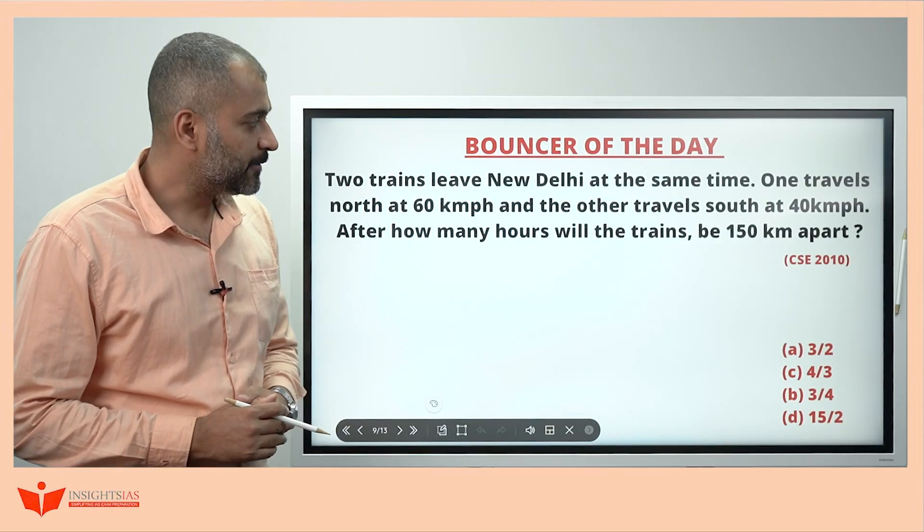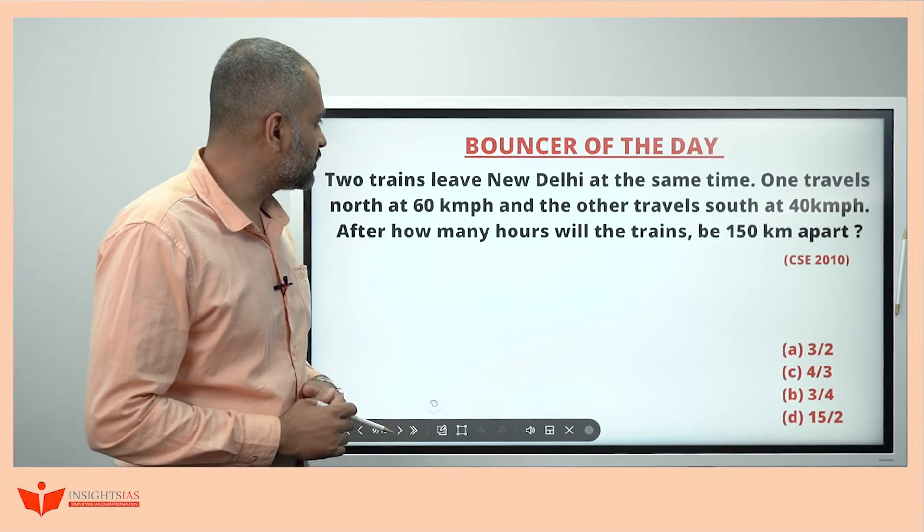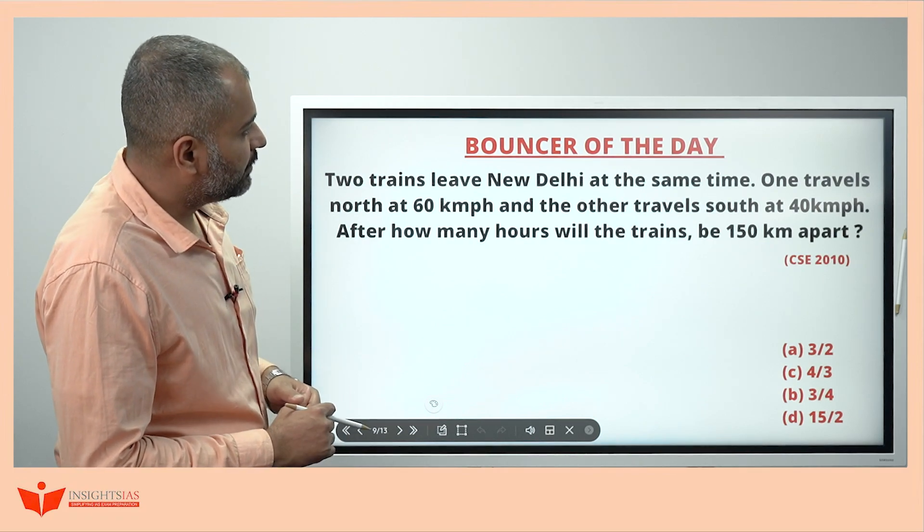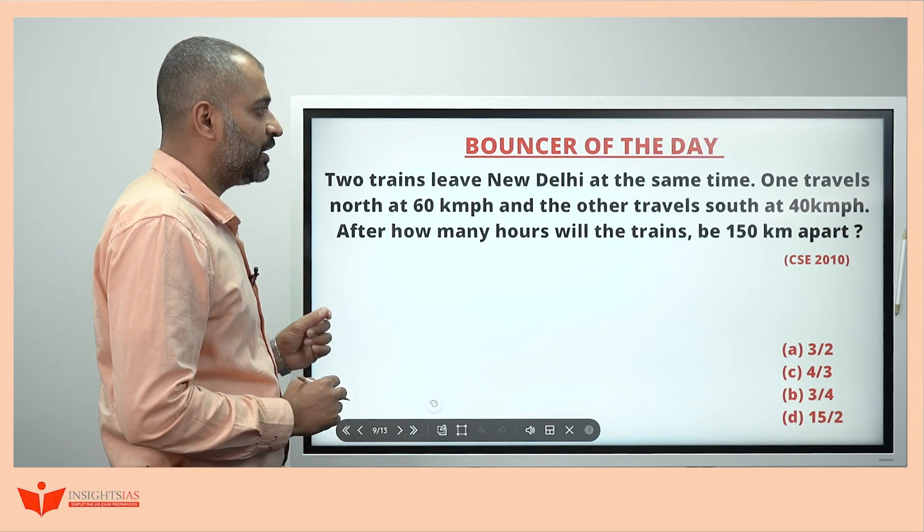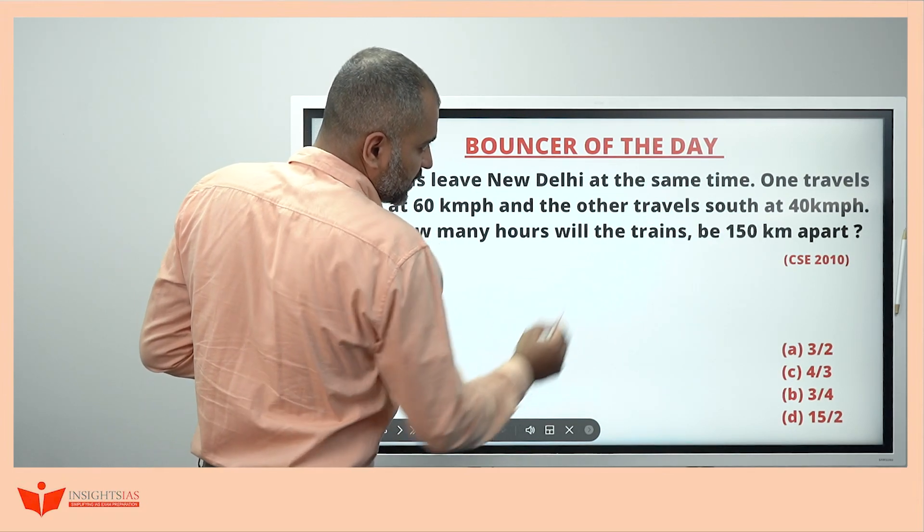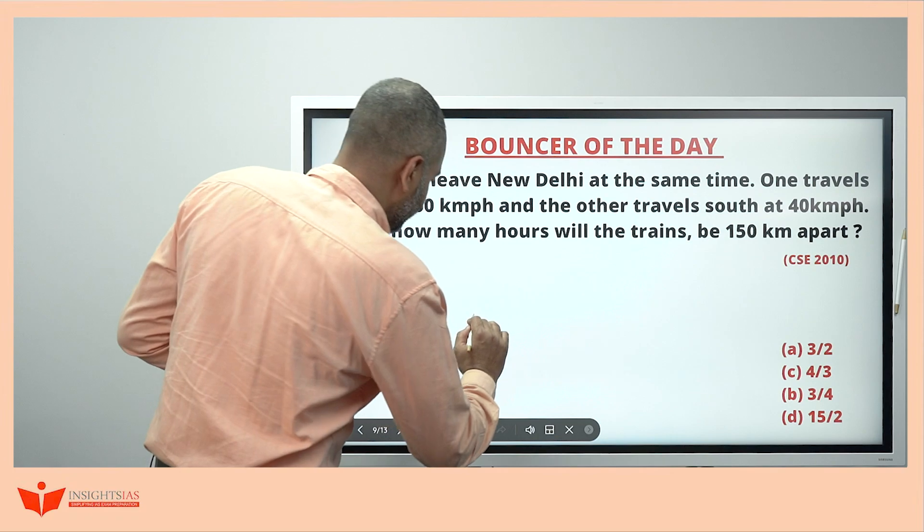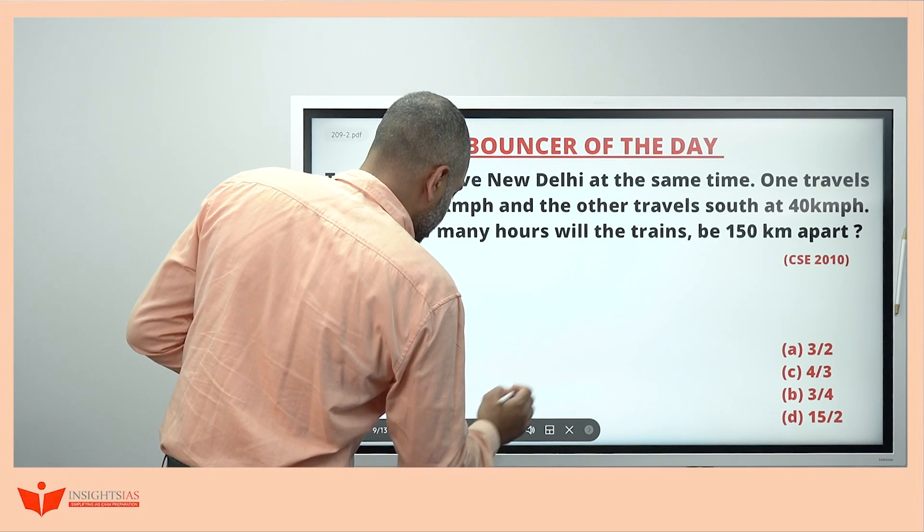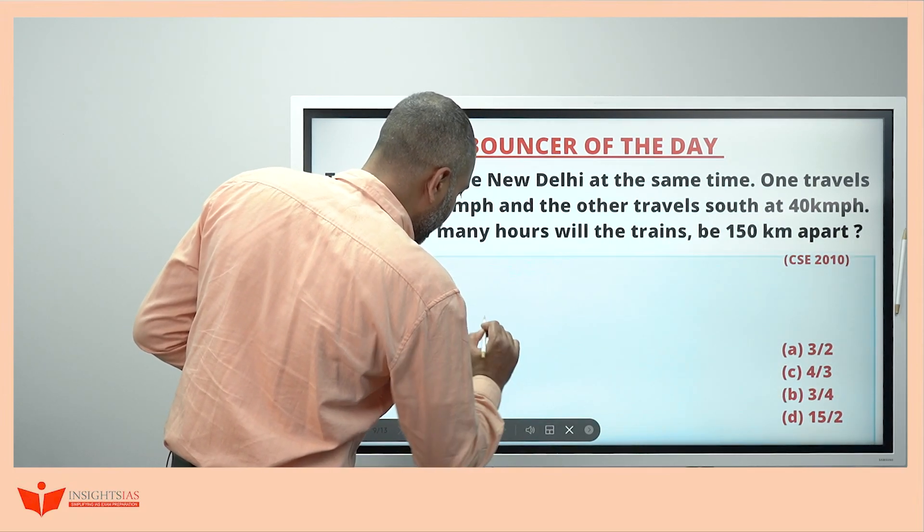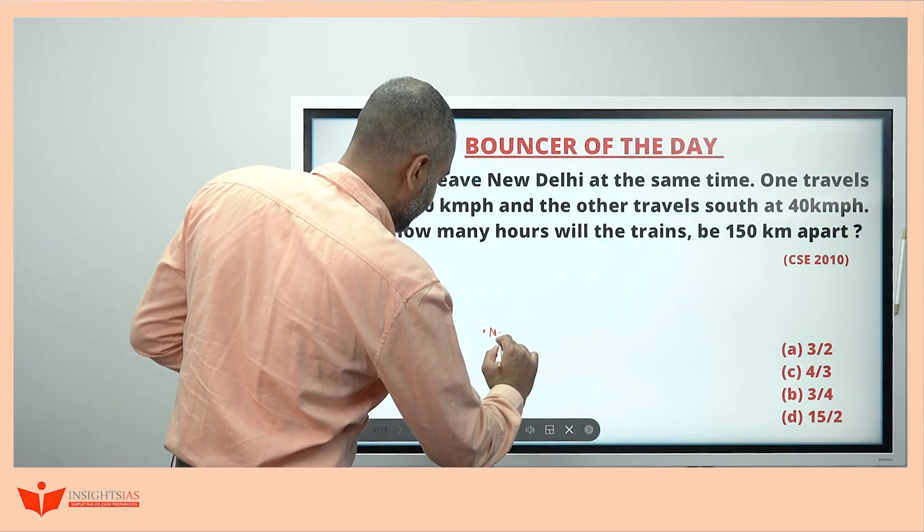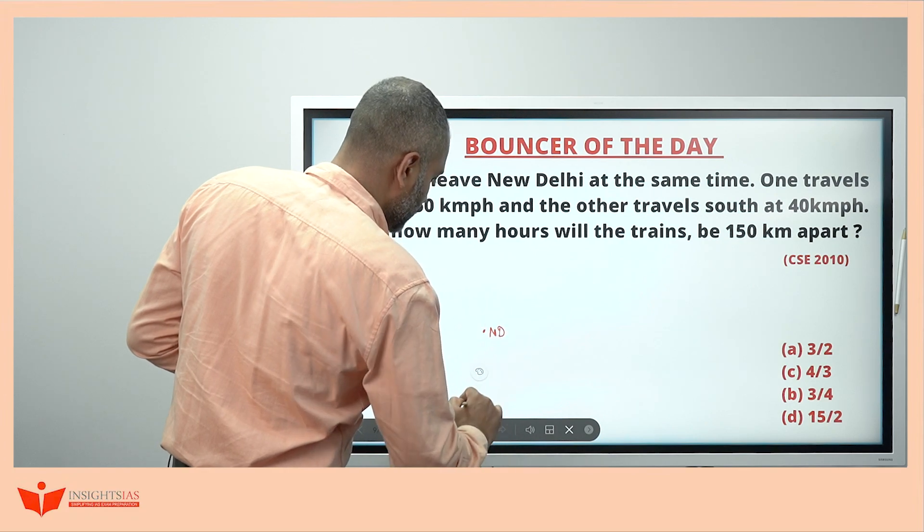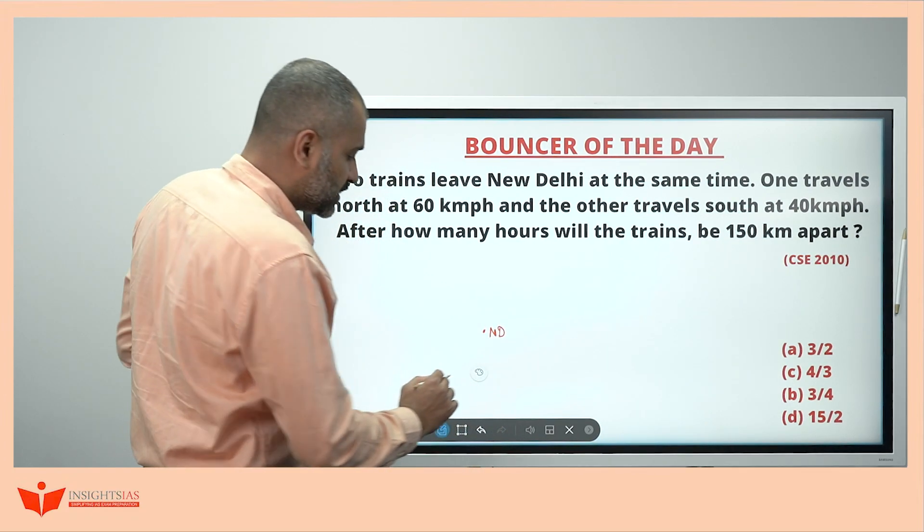And this is the bouncer of yesterday. This question was: two trains leave New Delhi at the same time. One travels north at 60 kilometer per hour and the other travels south at 40 kilometers per hour. Look here now. Let us say this is the point. This is the New Delhi. Okay.